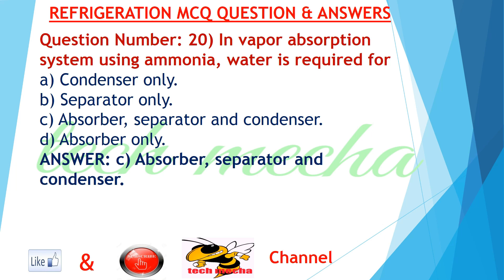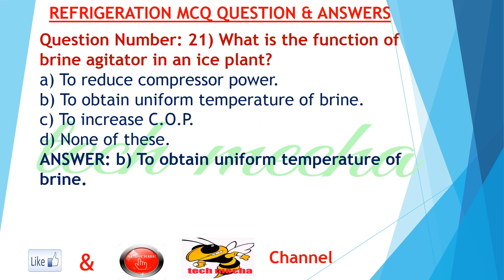Question number 20: In a vapor absorption system using ammonia, water is required for A. condenser only, B. separator only, C. absorber, separator and condenser, D. absorber only. Answer: C. absorber, separator and condenser.